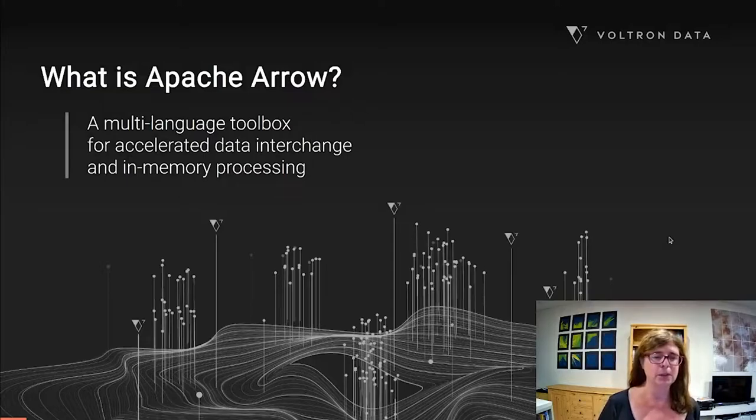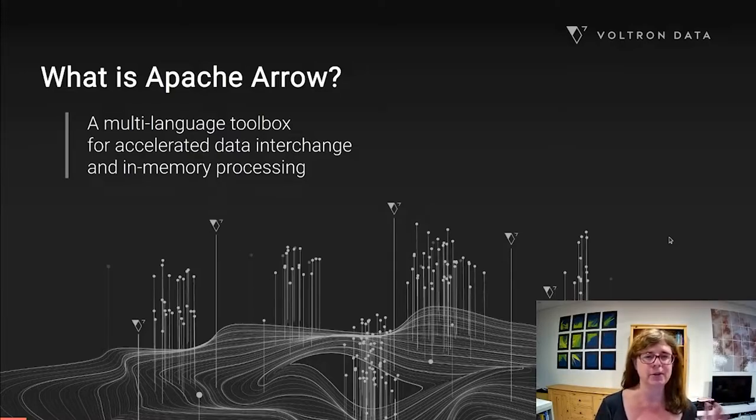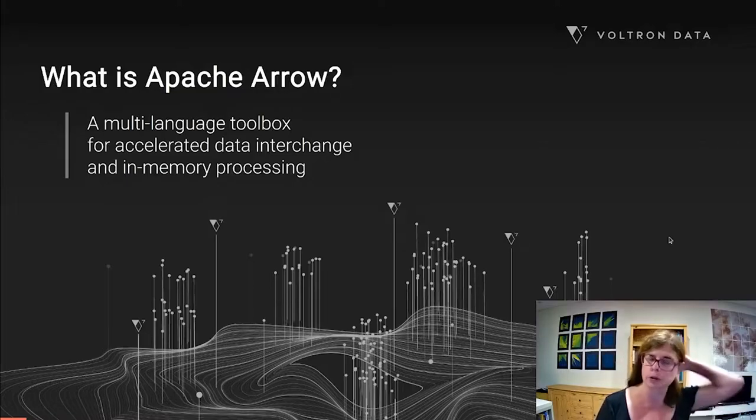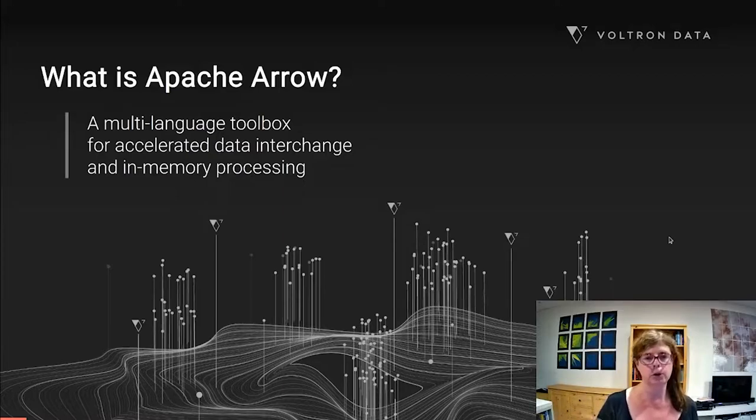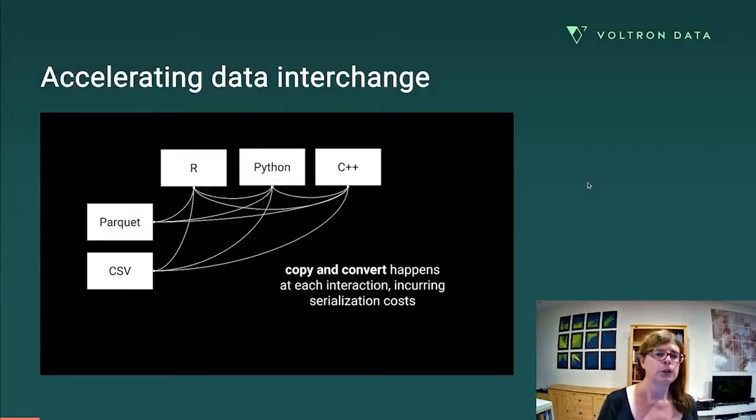Let's talk about Apache Arrow. As people at this conference will probably be aware, Apache Arrow is a multi-language toolbox for accelerated data interchange and in-memory processing. And I say that a little bit like a haiku for a reason. There are three different points that I try to communicate to new users. Firstly, that it's a multi-language toolbox.